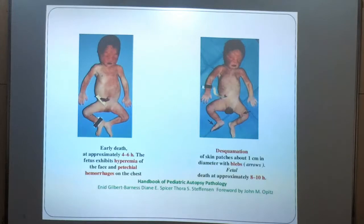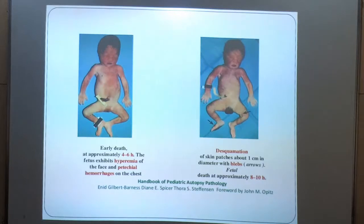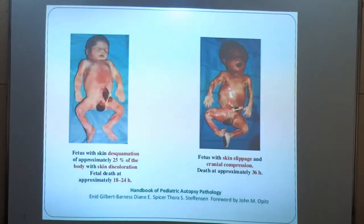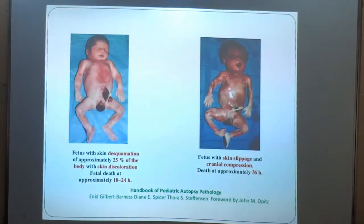These are some pictures of early death at approximately 4 to 6 hours. The fetus exhibits hyperemia of the face and petechial hemorrhages on the chest. In the other picture, desquamation of skin patches about 1 cm diameter with blebs is seen. A fetus with skin desquamation covering 25% of the body with skin discoloration, and a fetus with skin slippage and cranial compression, showing death at approximately 36 hours.